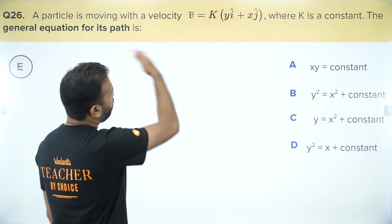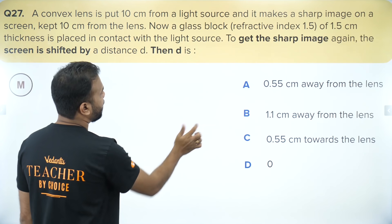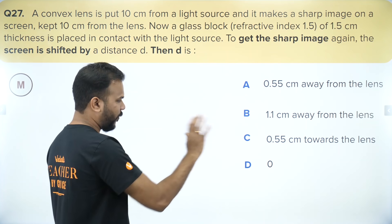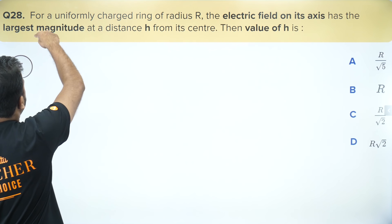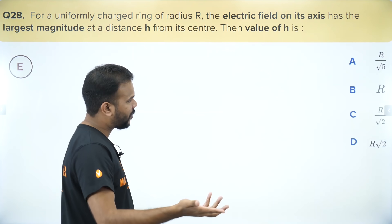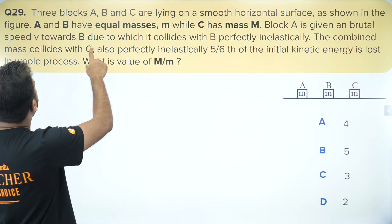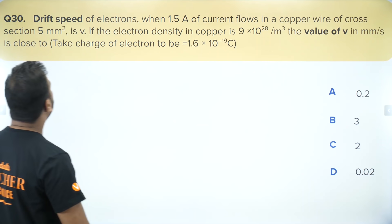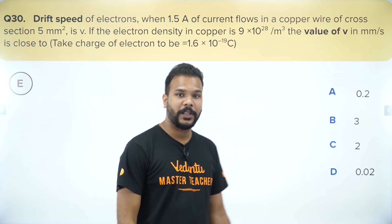Modern physics question — find work function using the photoelectric equation. We know the equation, marking as mediocre. A kinematics question with velocity given — find the equation of the path by differentiating X and Y. Marking as easy. Lens question to get a sharp image — mirror-lens formula will be used. Marking as mediocre. A uniformly charged ring — the electric field on the axis is largest at H = R/√2, most people already know this. Marking as easy. Three blocks with perfectly inelastic collision — doable but not fast, marking as mediocre. Finally, drift speed to be found using I = nAVd — apply directly. All 30 questions done.